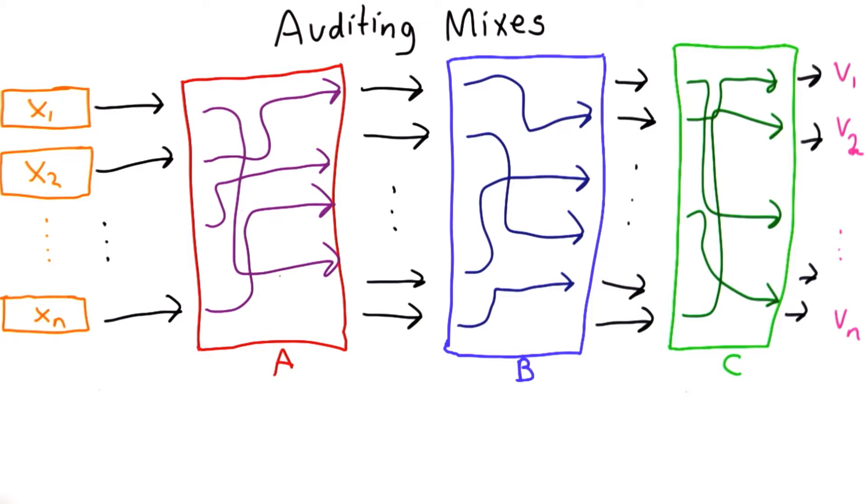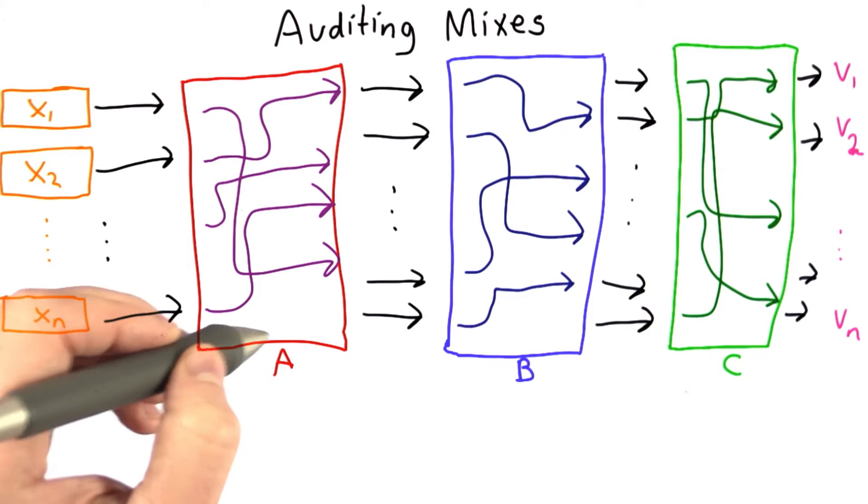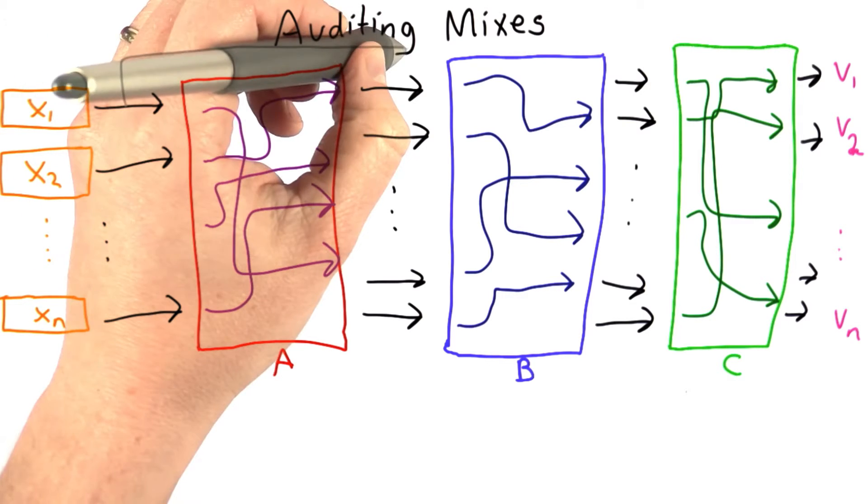So to do that, we need to provide extra inputs. Instead of the voter just providing the vote as encrypted to party A, they'll provide it to party B as well.